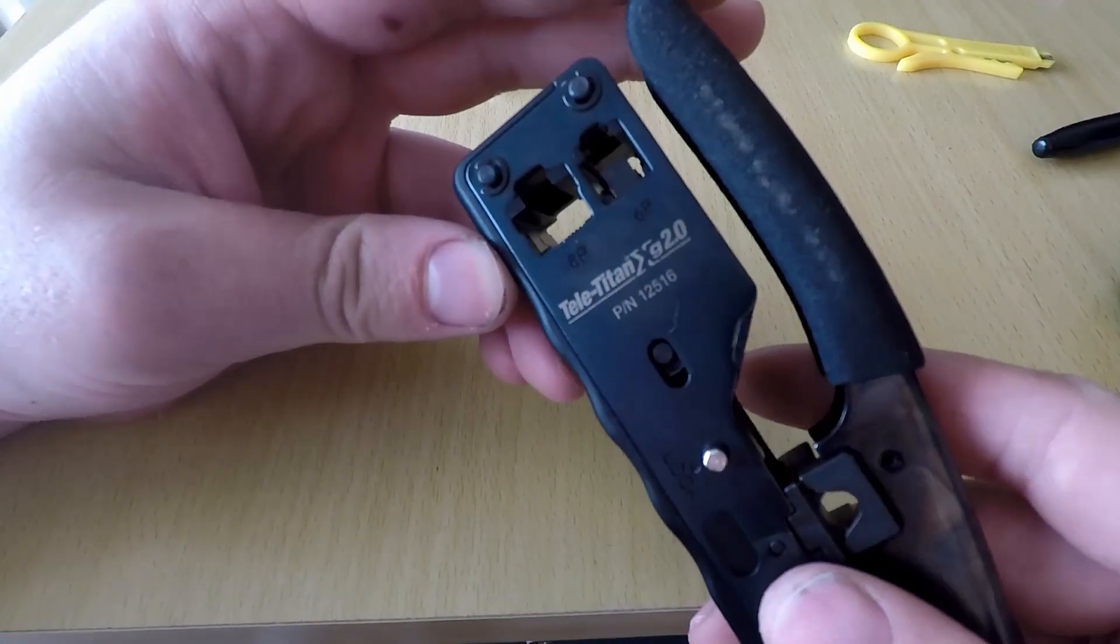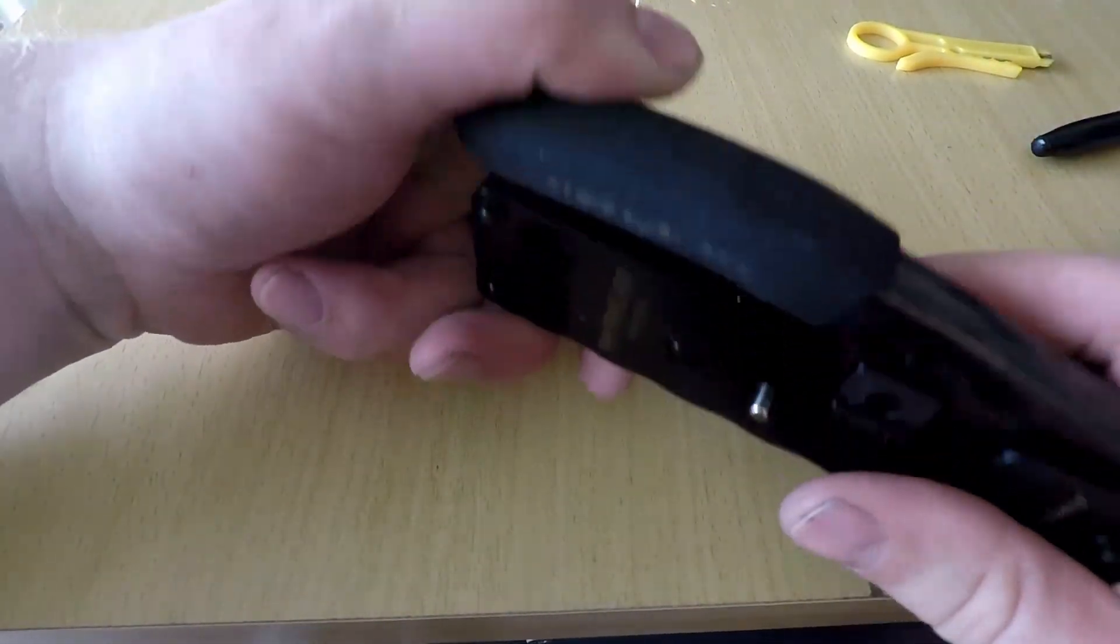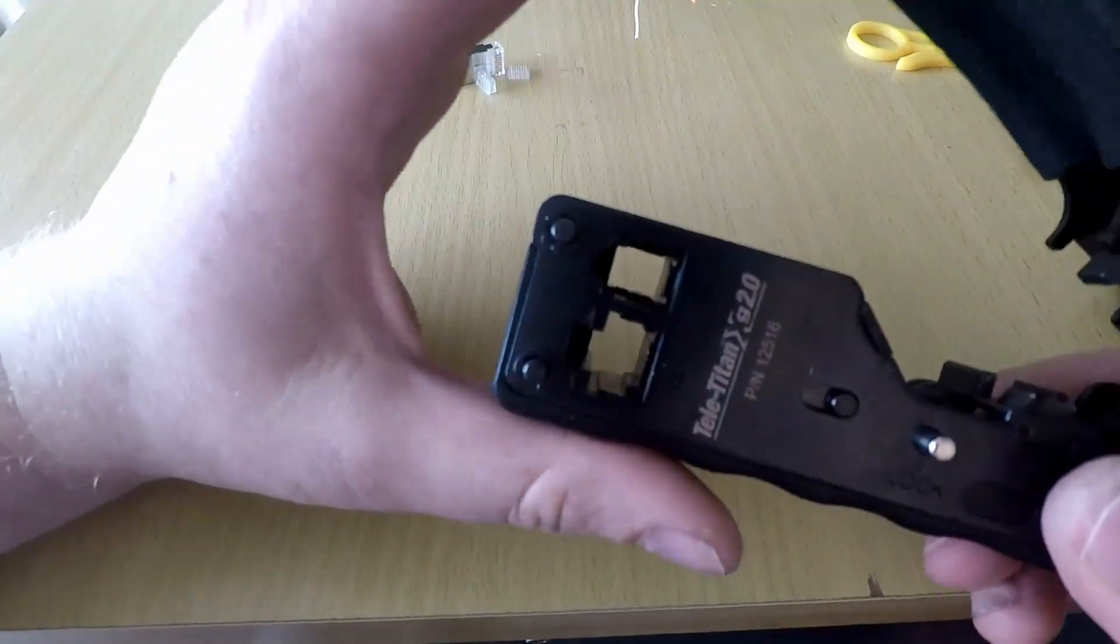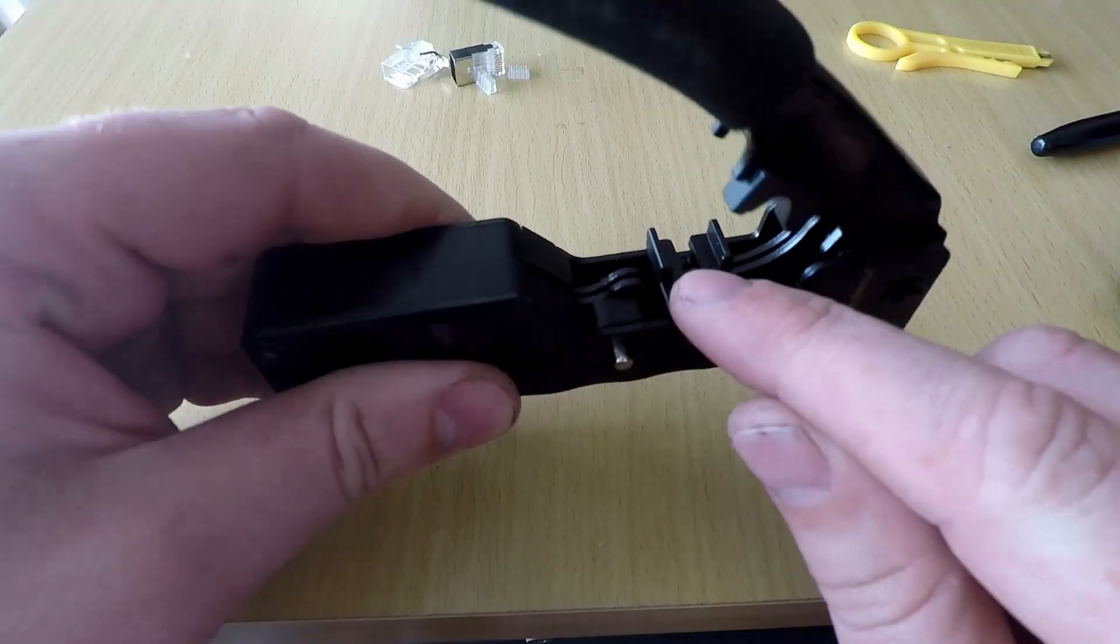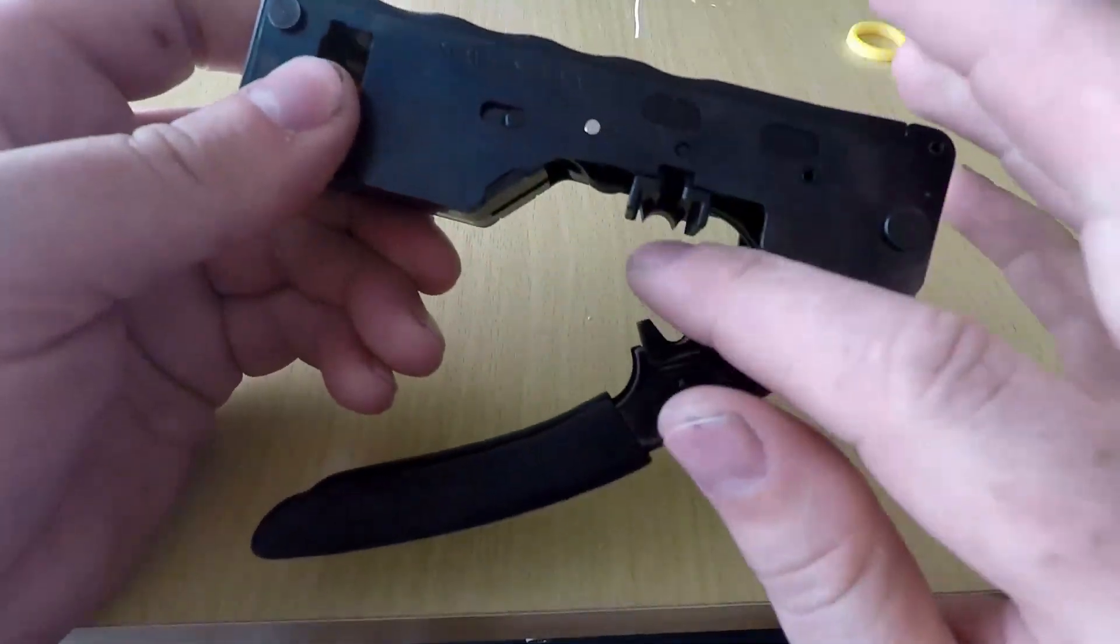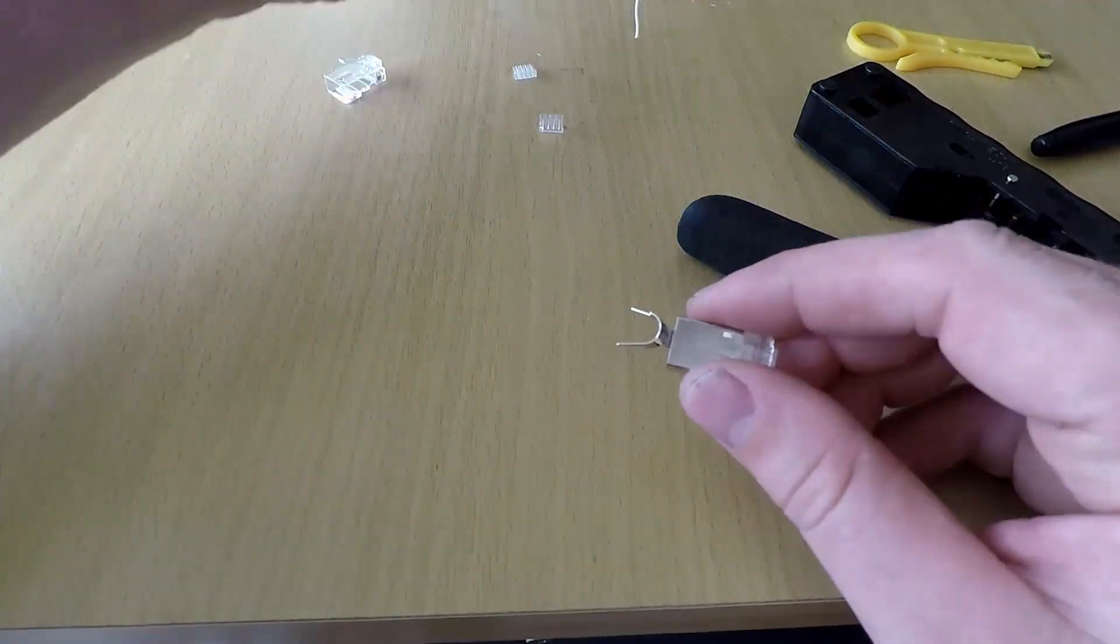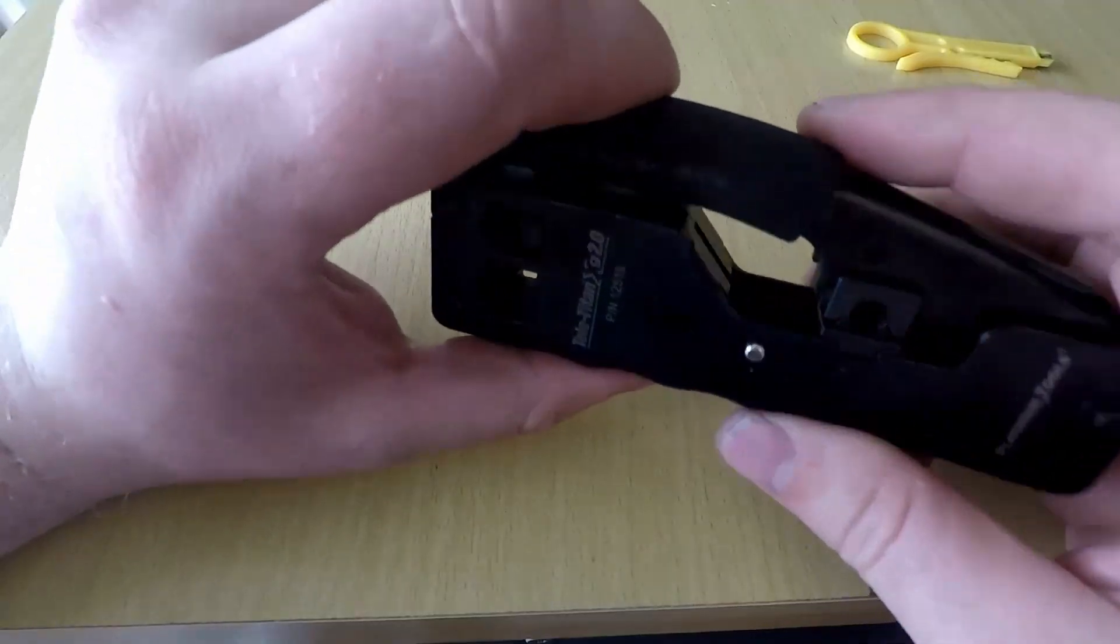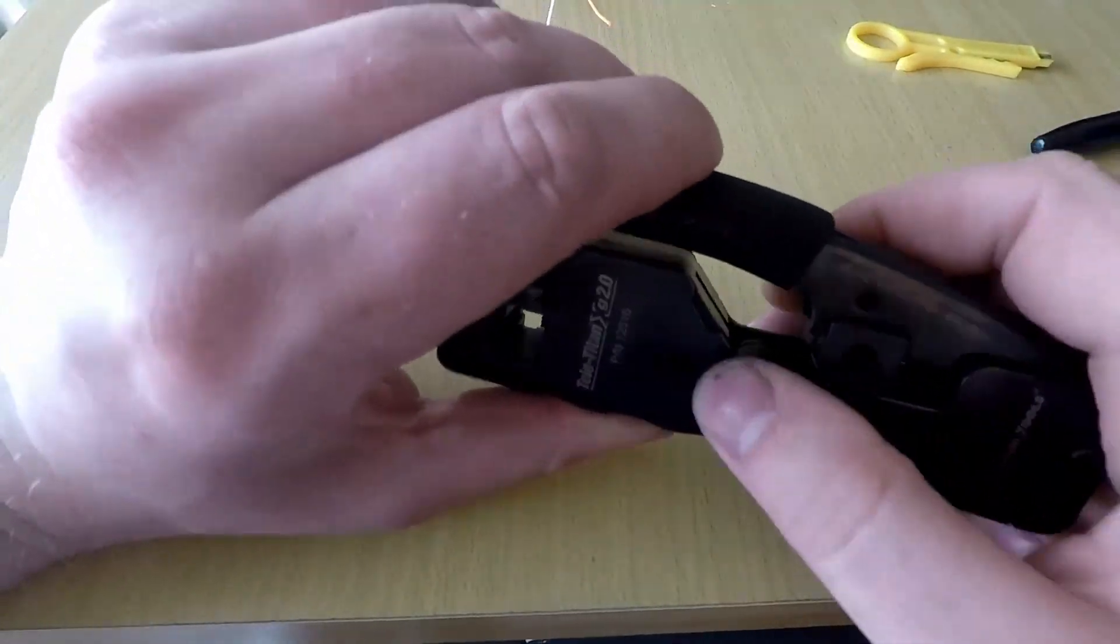This one is the TeleTitan 2 and firstly you've got your ethernet crimp end here. Now the other part here is your grounding crimp and this part here crimps this metal part around the grounding wire. These here should be around a hundred bucks. Before you do CAT 6A make sure you get one.